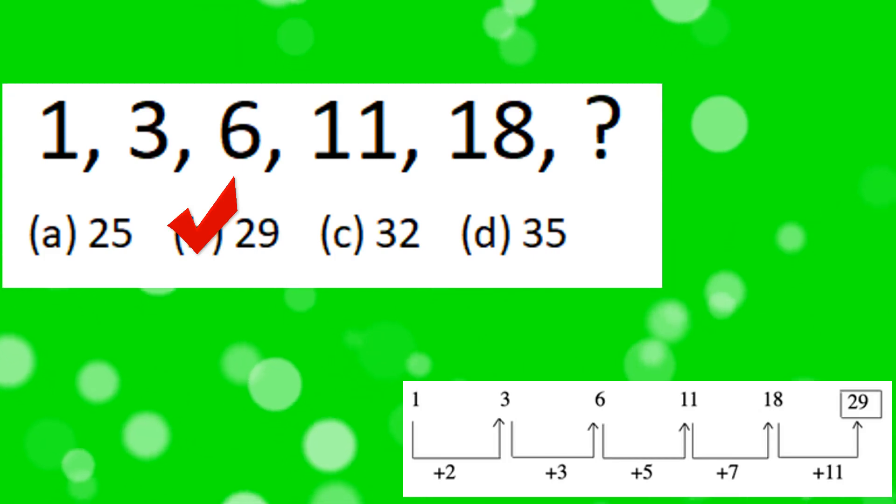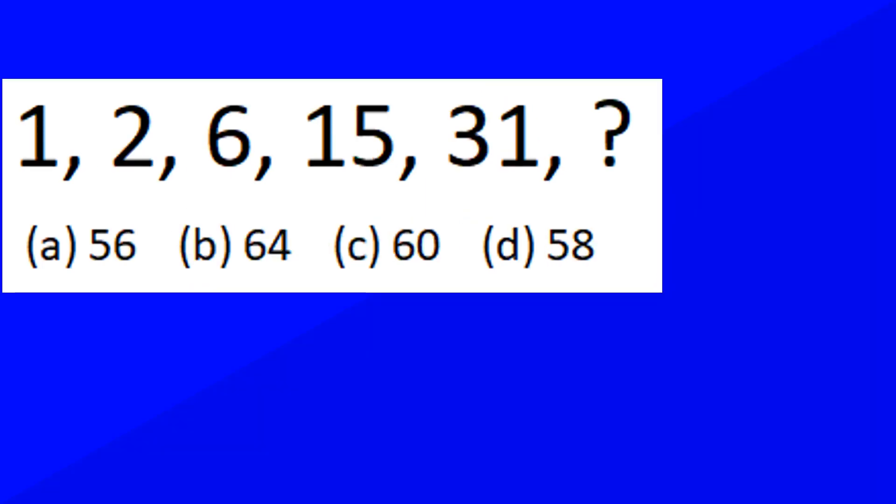Option B, that is 29, is the correct answer. Here the series consists of a pattern of addition of prime numbers like 1 plus 2 equals 3, 3 plus 3 equals 6, and so on.